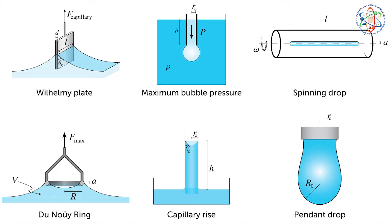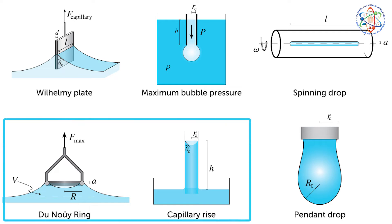There are multiple methods to identify the surface tension: the drop method, the ring method, the capillary rise method, and the rebundus method. Today we familiarize ourselves with two methods: the ring method and the capillary method.